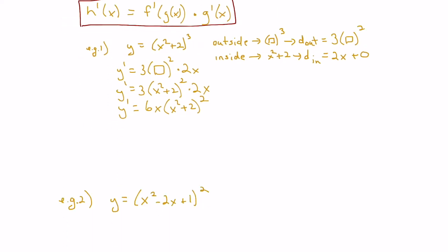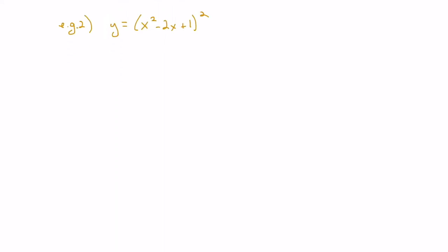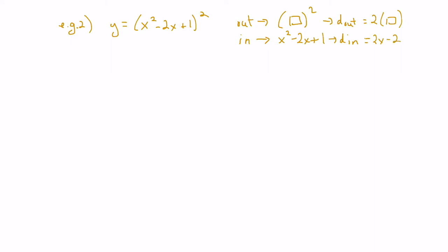Let's try example number 2. The outside function is the bracket squared and the inside function is x squared minus 2x plus 1. The derivative of the outside function is 2 bracket, and the derivative of the inside function is 2x minus 2. Applying the chain rule, the derivative would be 2 times the box, times 2x minus 2.